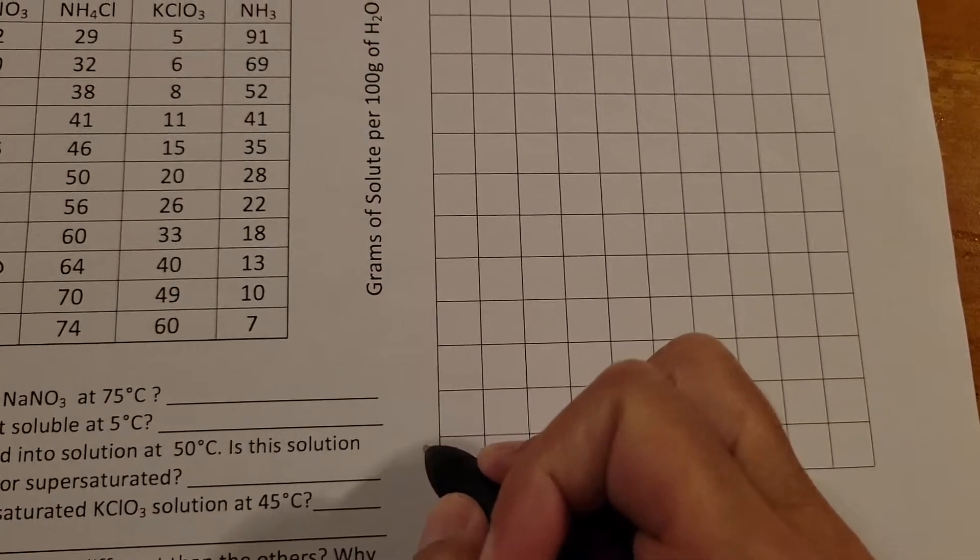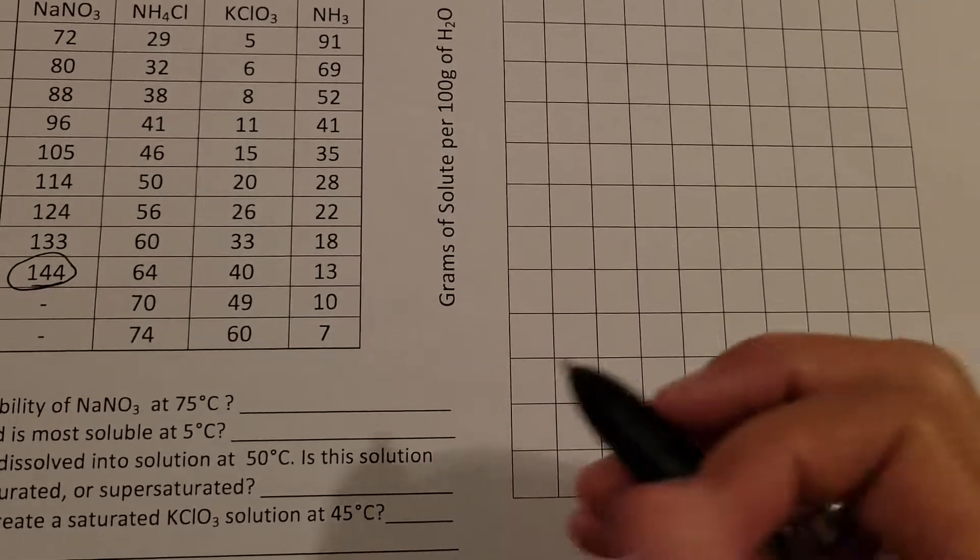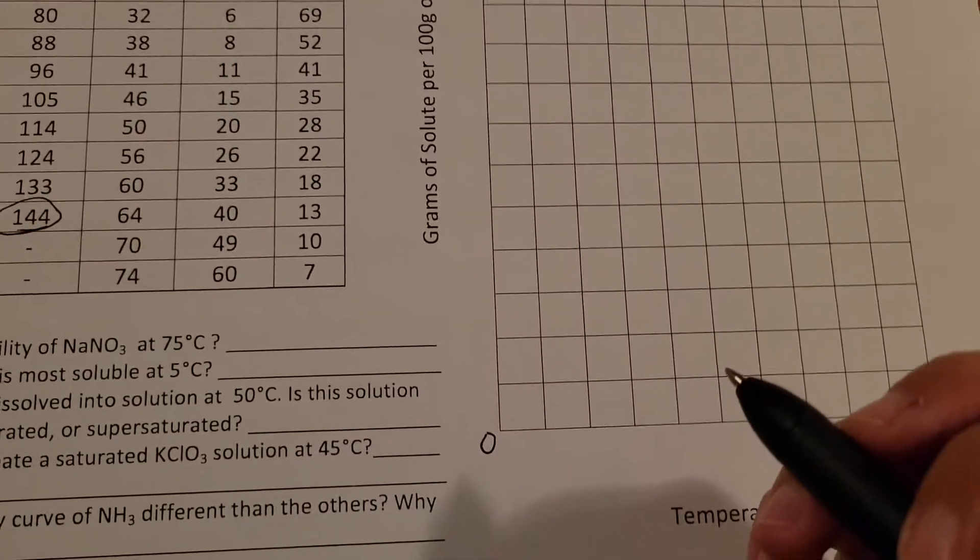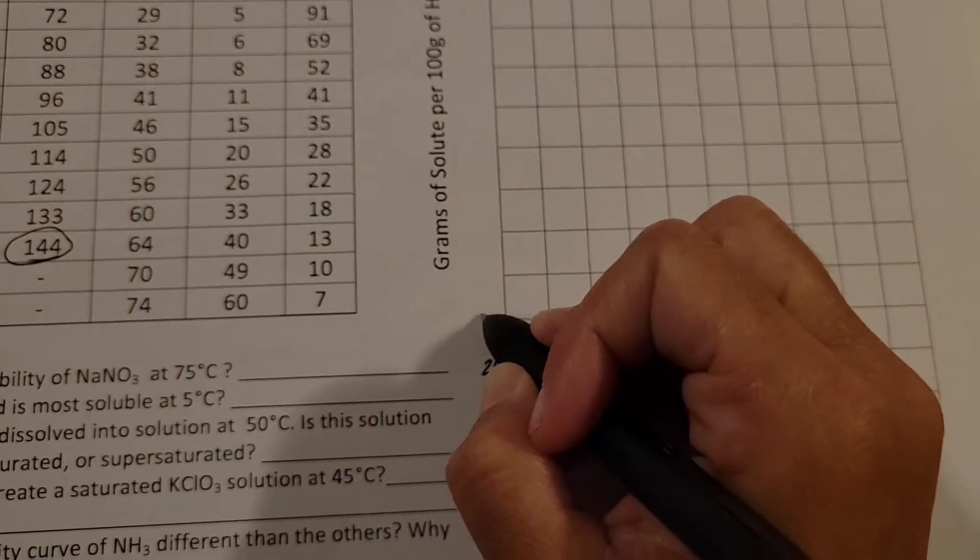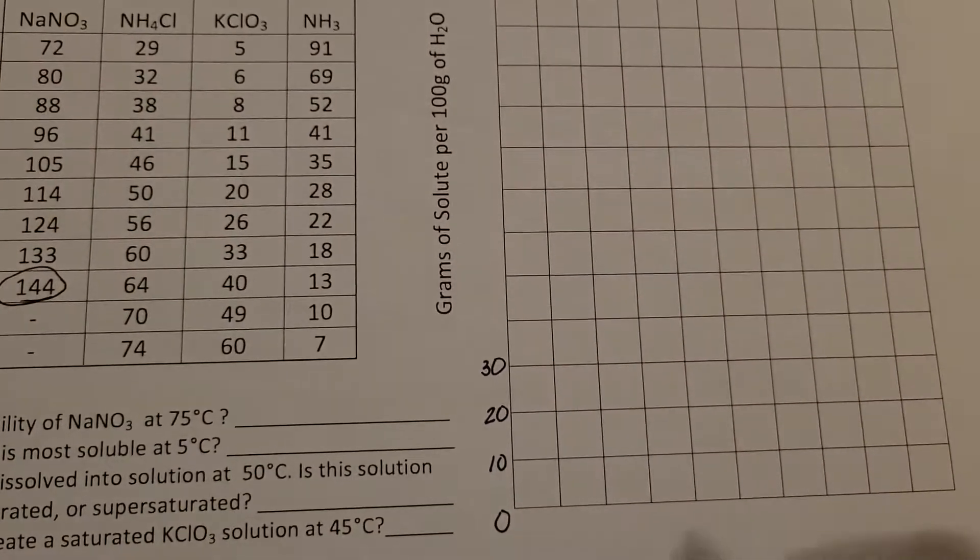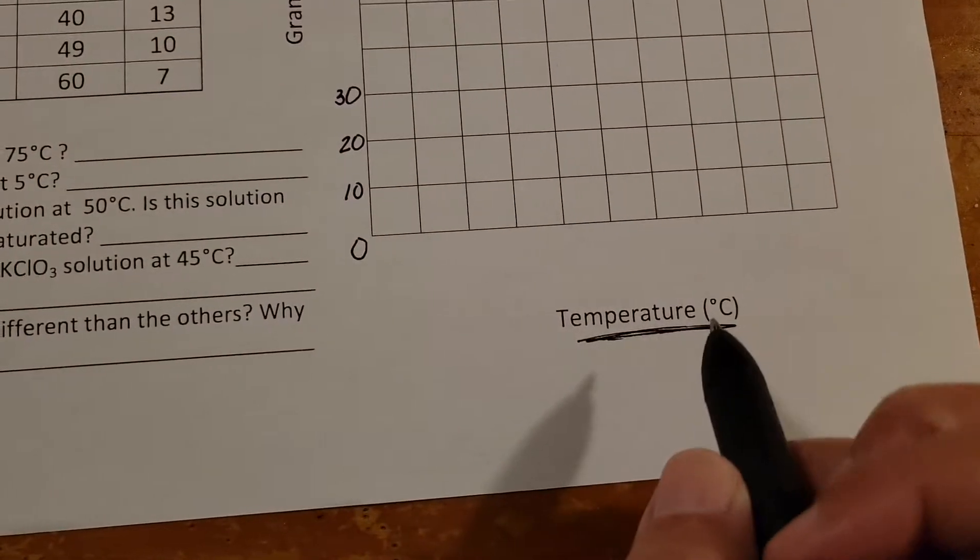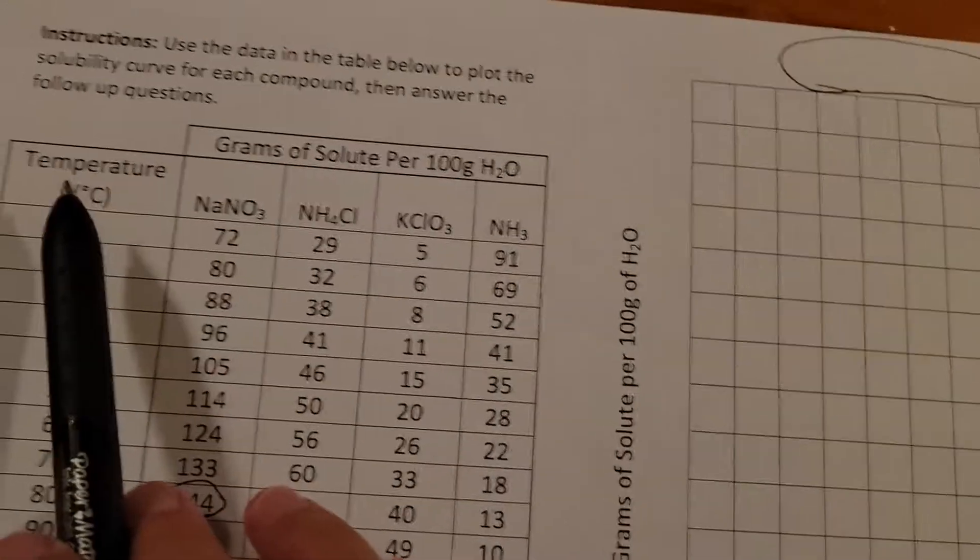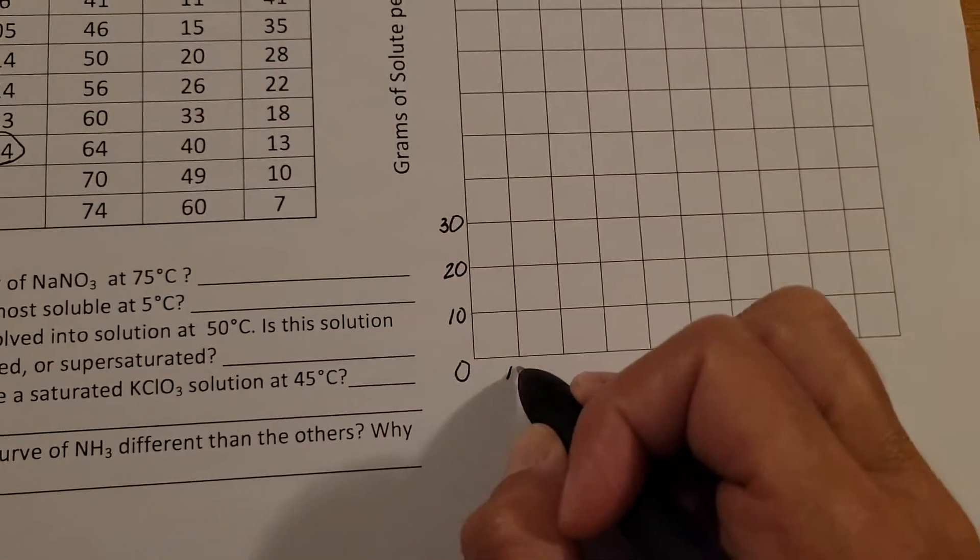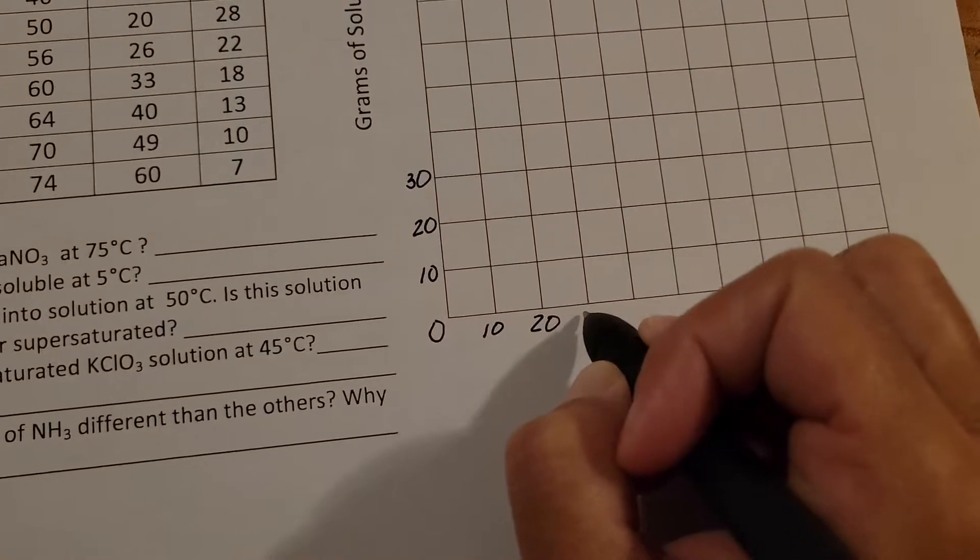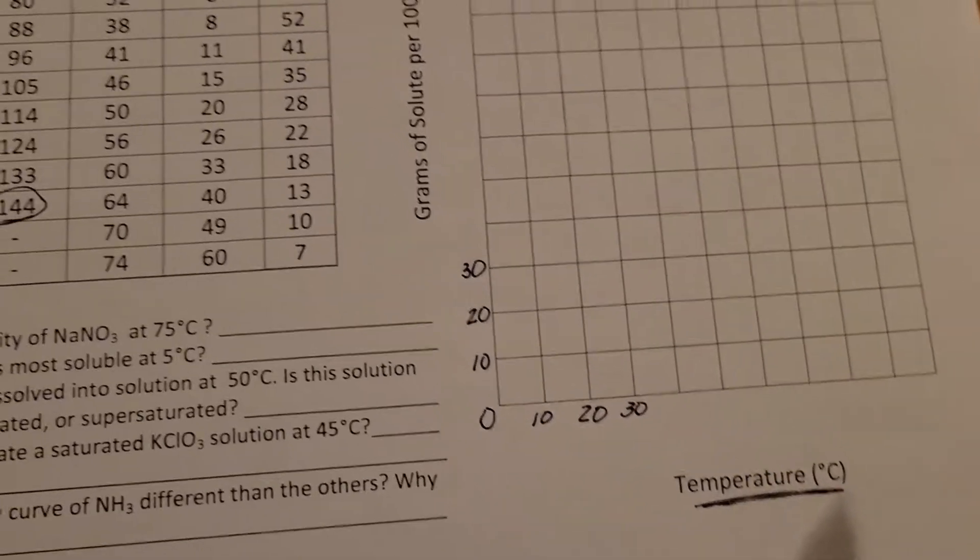I found if you count just by tens you're going to fit everything nicely on the graph. So here's your zero and then go ahead and count up by tens. And on the bottom is going to be your temperature in degrees Celsius, which we know is from zero to 100 in this graph. Same thing, if you just number by tens you'll have a nice graph.